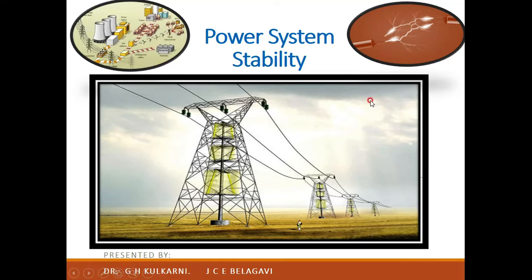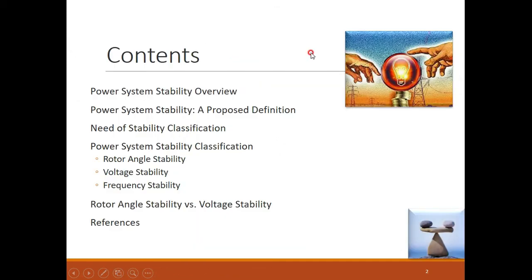We will start with the power system stability. First we will see the power system stability overview, then the definition of power system stability, and the necessity of stability classification. We will also cover different types of stability such as rotor angle stability, voltage stability, and frequency stability. Then we will compare rotor angle stability and voltage stability.